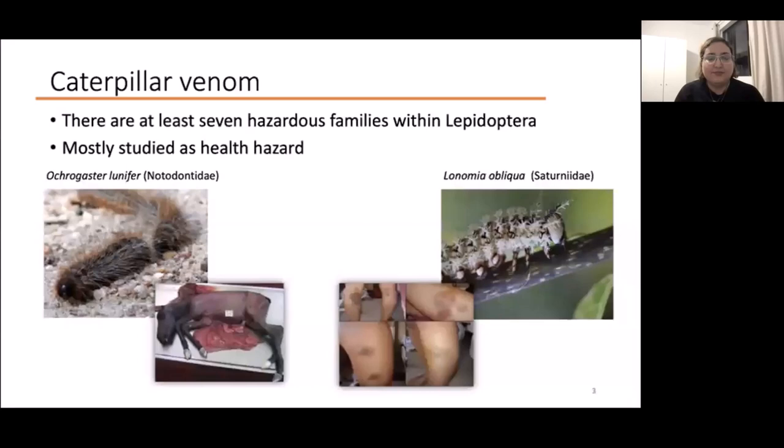They are really underrepresented in venom research. If they have been studied, it was mostly because they were health hazards, not usually as a source of therapeutics or for understanding their venom composition. Here are the two most studied caterpillars: the right one, Lonomia obliqua, which you are probably familiar with if you've been to South America, has been comprehensively studied mostly due to its venom's lethal effect because it can cause hemorrhagic syndrome and blood coagulation and eventually death.